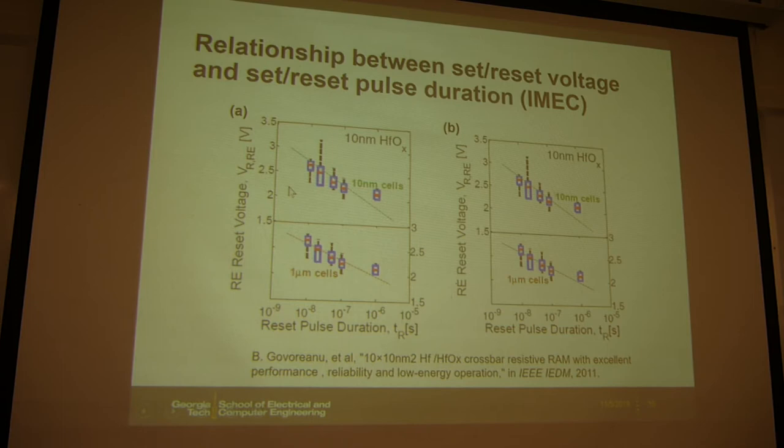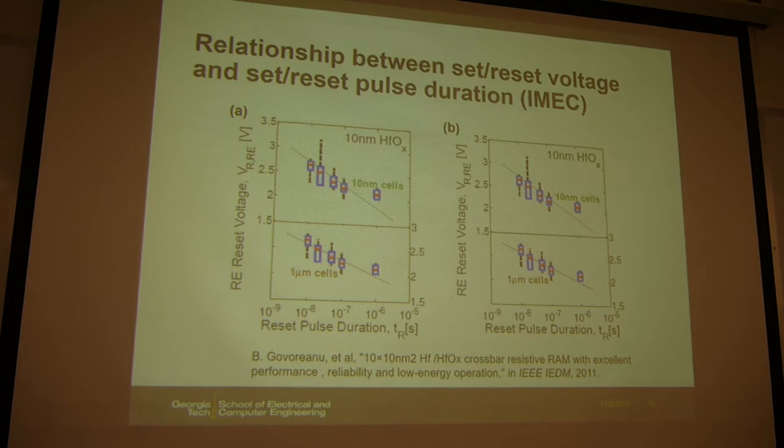There are trade-offs in speed versus voltage. If you want to switch the cell faster, you have to apply a larger voltage, because driving ions to migrate in the oxide requires larger voltage to accelerate their movement.